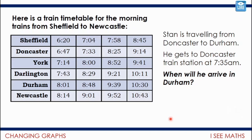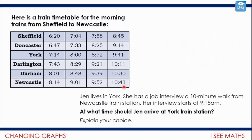So he's travelling from Doncaster, and if he gets there at 7.35 — oh, it's so painful when this happens — he's missed this train by two minutes. So Stan, you'll have to be on the 8.25. I've been in that position before, Stan. And then when will he arrive in Durham? It will be at 9.39. There's also a question for you to have a go at about getting someone to their job interview at the right time — think about the context of a job interview and an appropriate time to arrive. That's my little tip.